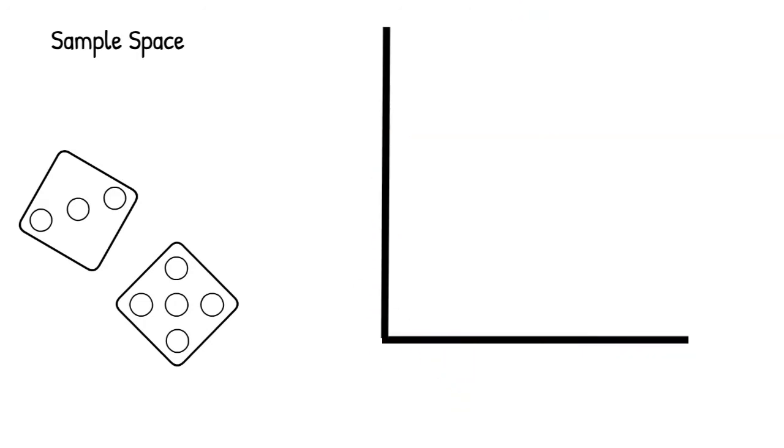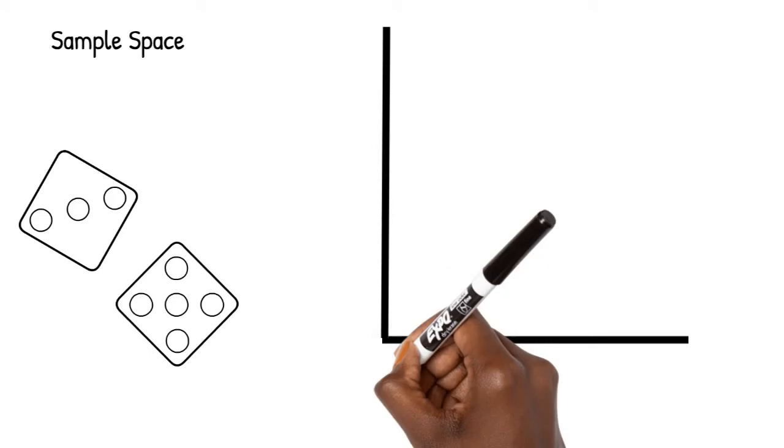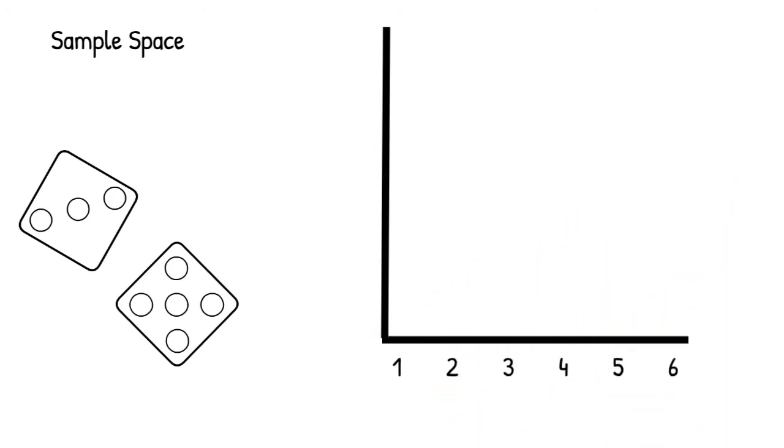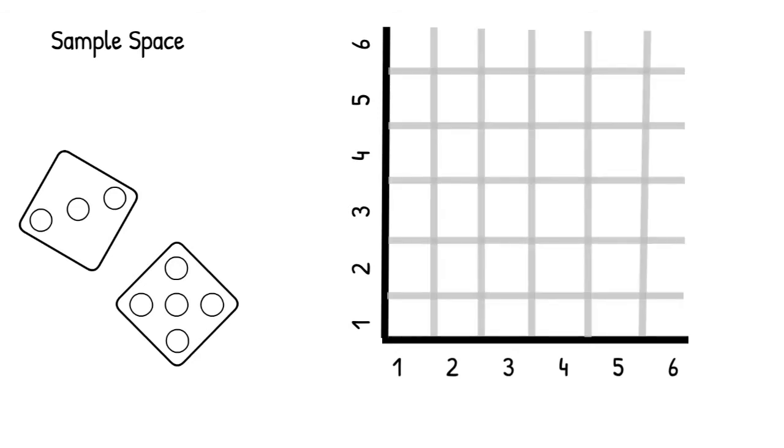Another tool to look at sample space might work better here. A two-dimensional grid can be used when only two things occur. In this case, two dice were tossed. The grid works better than the tree here because with several outcomes within each trial, it's simply easier to look at. We list outcomes one to six on one axis representing the outcomes for our first die and outcomes one to six on the second axis representing outcomes for the second die. We then create a grid that will allow us to see the combined outcomes for both dice.